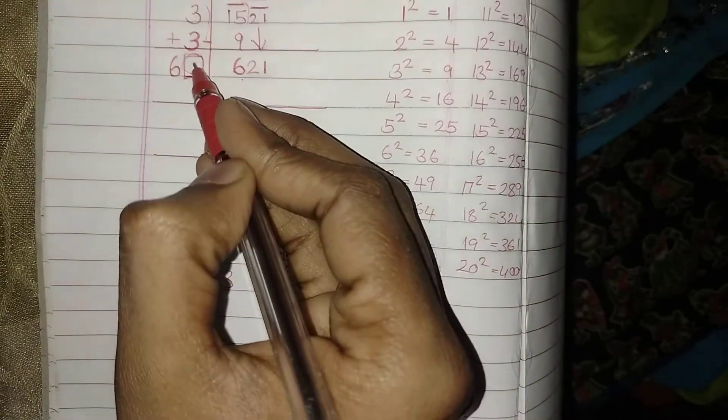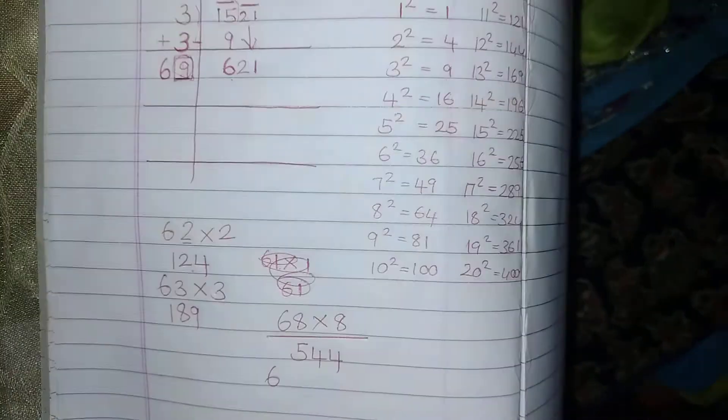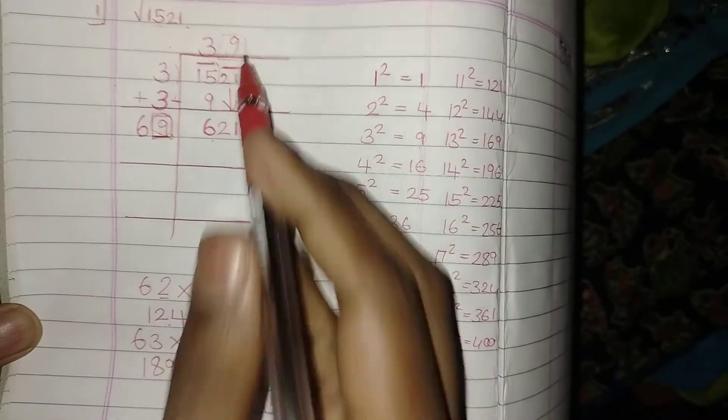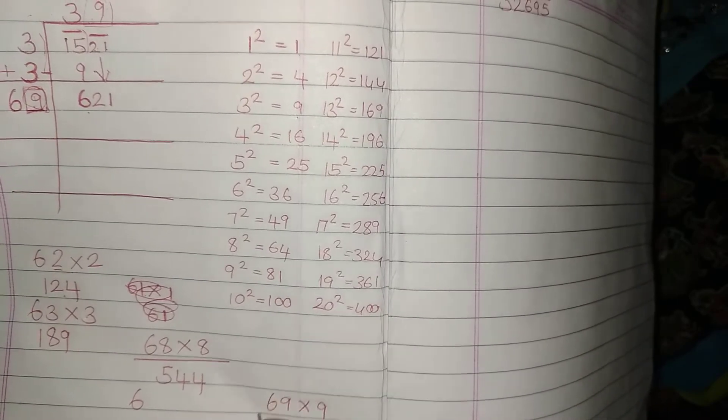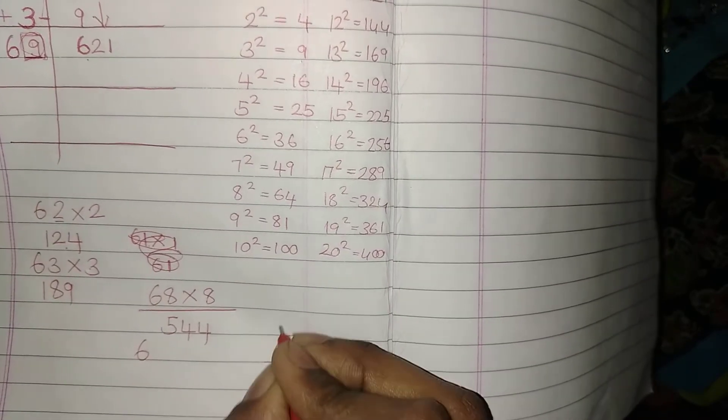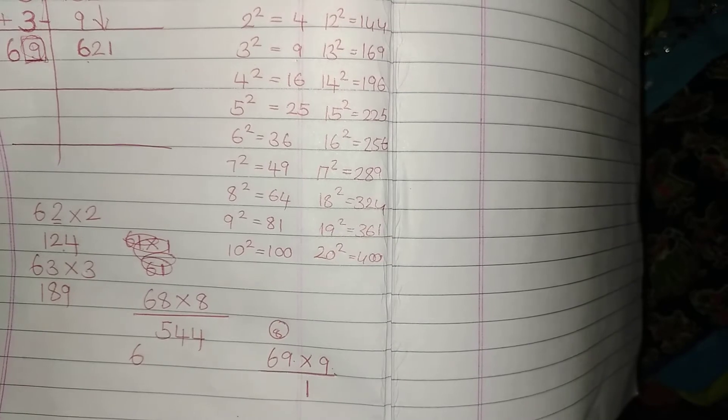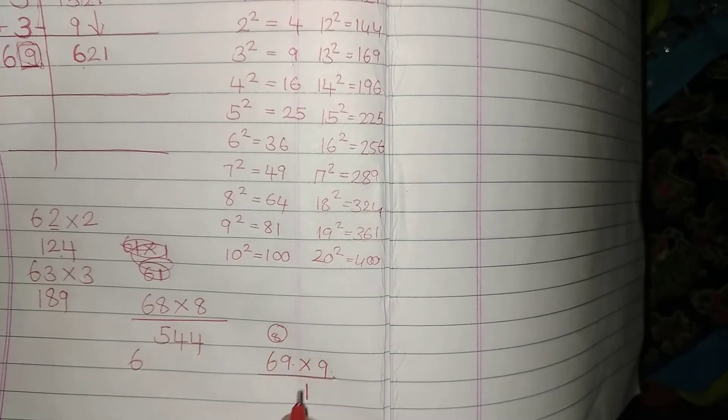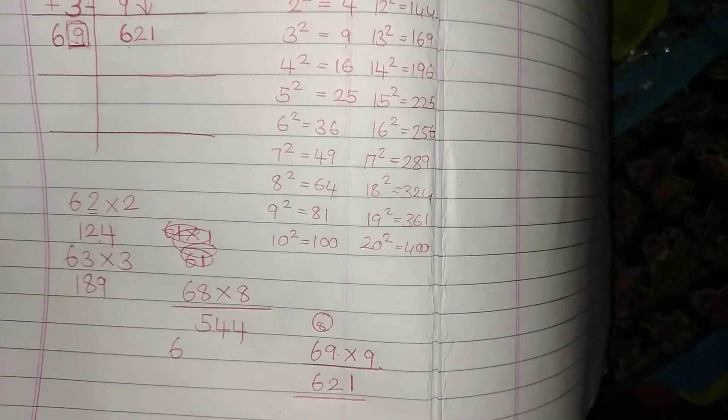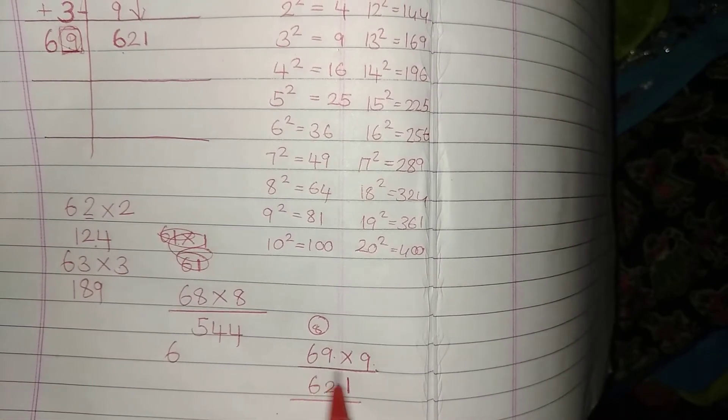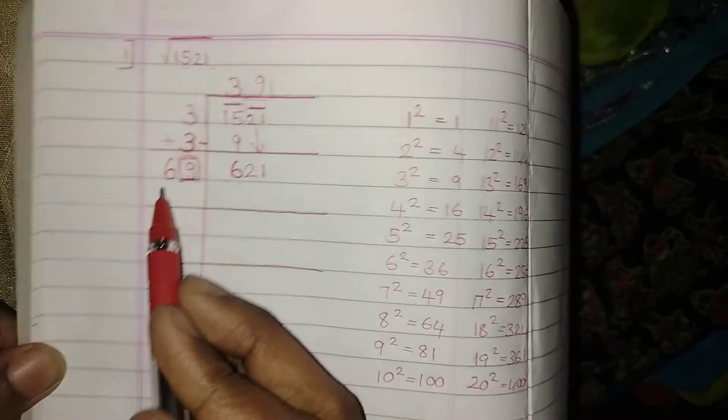Lastly, let me try with the number called 9. If I try with the number 69 into 9, let us see what is the result I am going to get. 69 into 9: 9 times 9 are 81, carry 8. 9 times 6 are 54, 54 plus 8 will fetch you 621. So I got 69 into 9, 621.